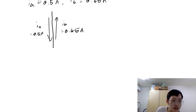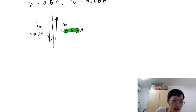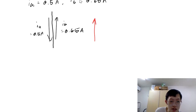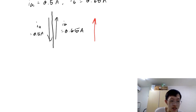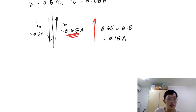To find the branch current in the middle branch, we compare Ia and Ib. The dominant current — the one larger in magnitude — is Ib at 0.65 amperes, so the direction of the net current is upwards following Ib. The magnitude is simply the larger current minus the smaller: 0.65 minus 0.5, giving us the magnitude of the net branch current.